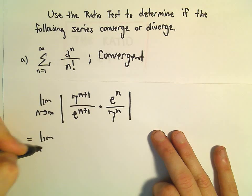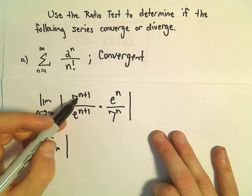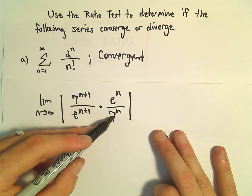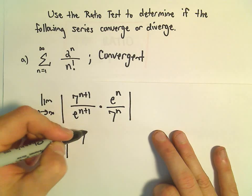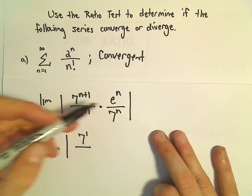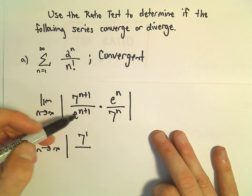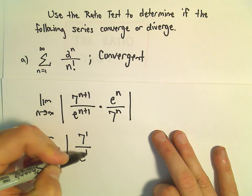Well now we can simplify this. We've got 7 to the n plus 1 over 7 to the n. That's going to leave us with a 7 in the numerator. e to the n over e to the n plus 1 is going to leave us with an e to the first power.